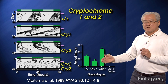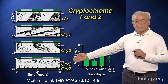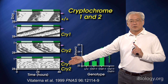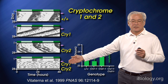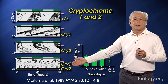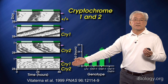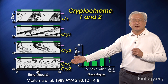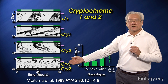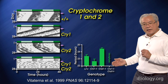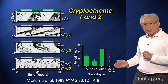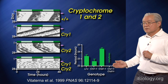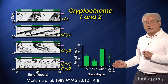And then if you delete both genes, cry1 and cry2, the mouse then loses its rhythm. This is really the reason that we called cry1 and cry2 part of the essential clock gene network. Cry1 and cry2 double-knockout mice have no rhythm — they're arrhythmic.